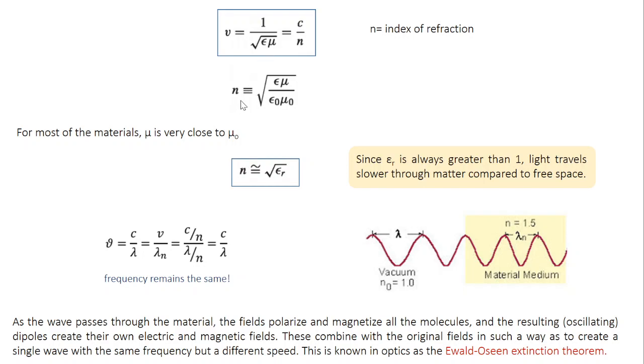Where N, which is square root of mu epsilon divided by mu naught epsilon naught, is a constant known as refractive index or index of refraction. So if you take free space, mu is mu naught epsilon equal to epsilon naught. So both the denominator and numerator cancel, you get N equal to 1. So refractive index of vacuum or free space equal to 1.